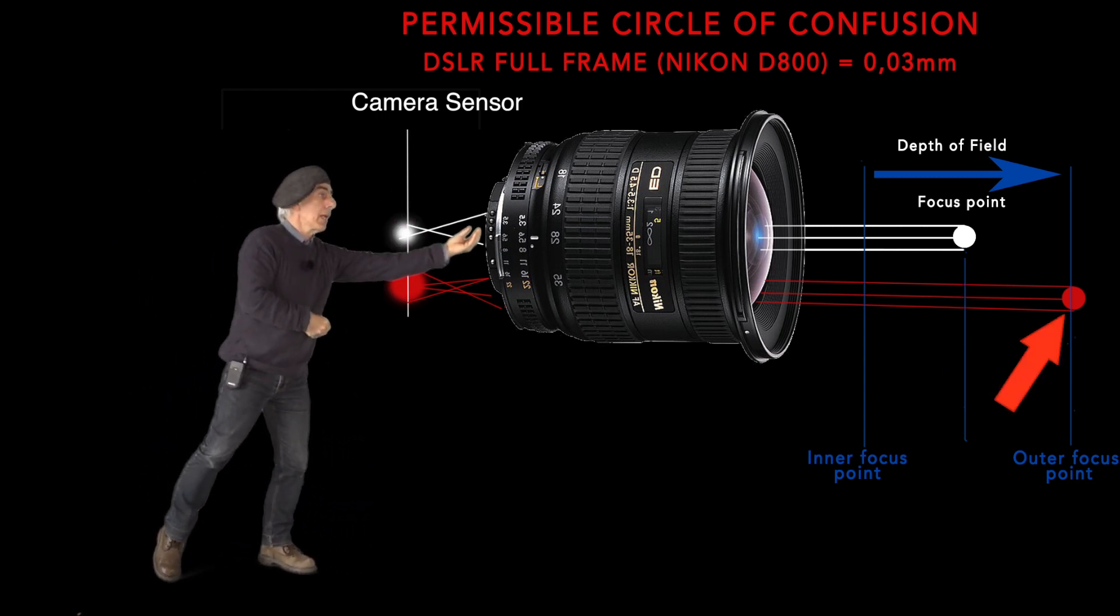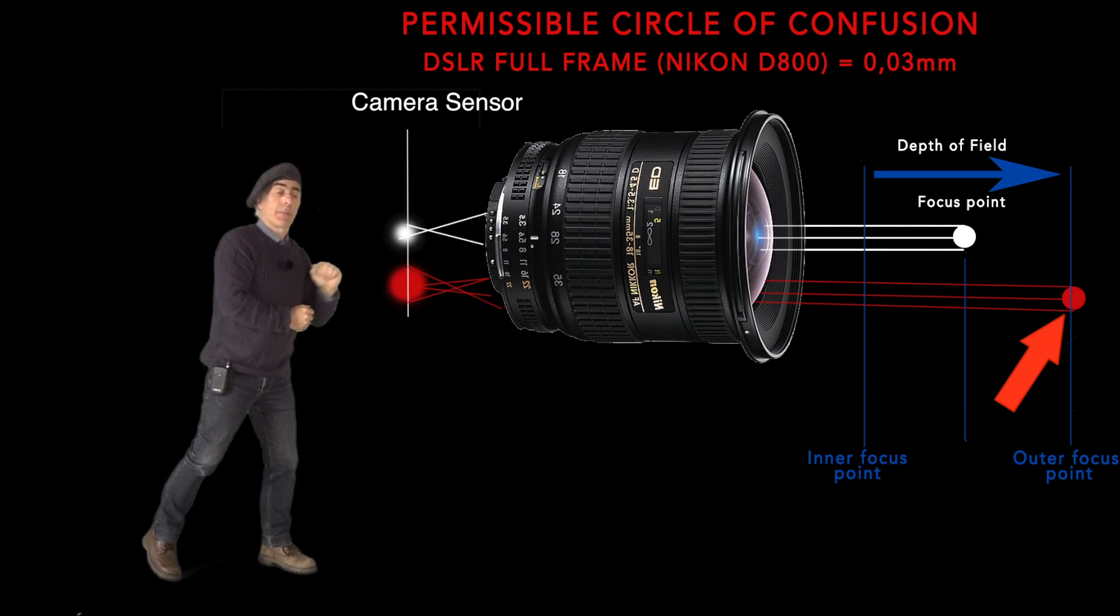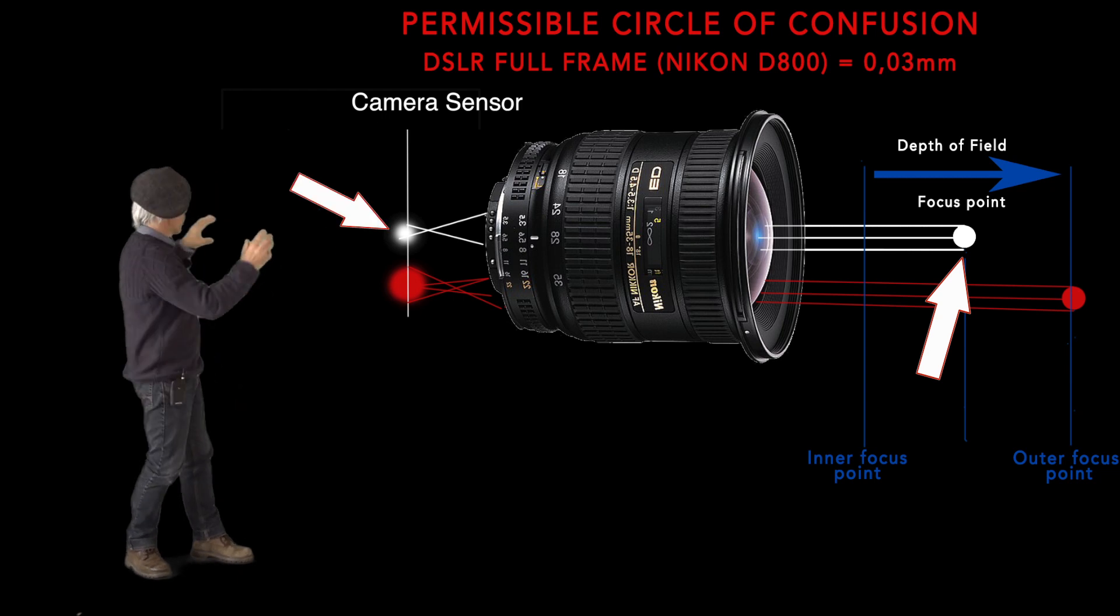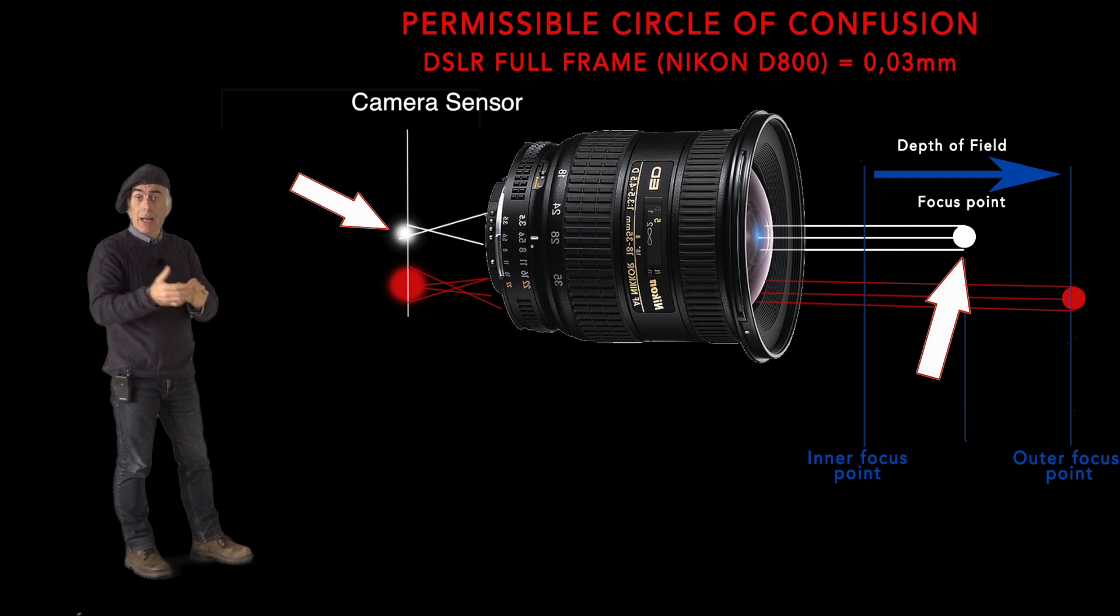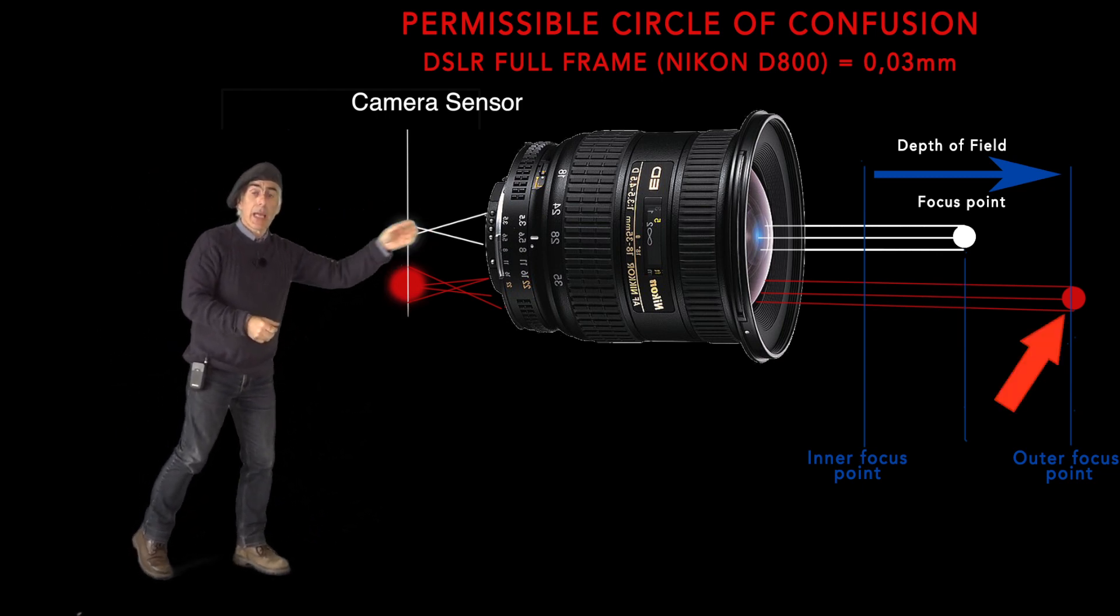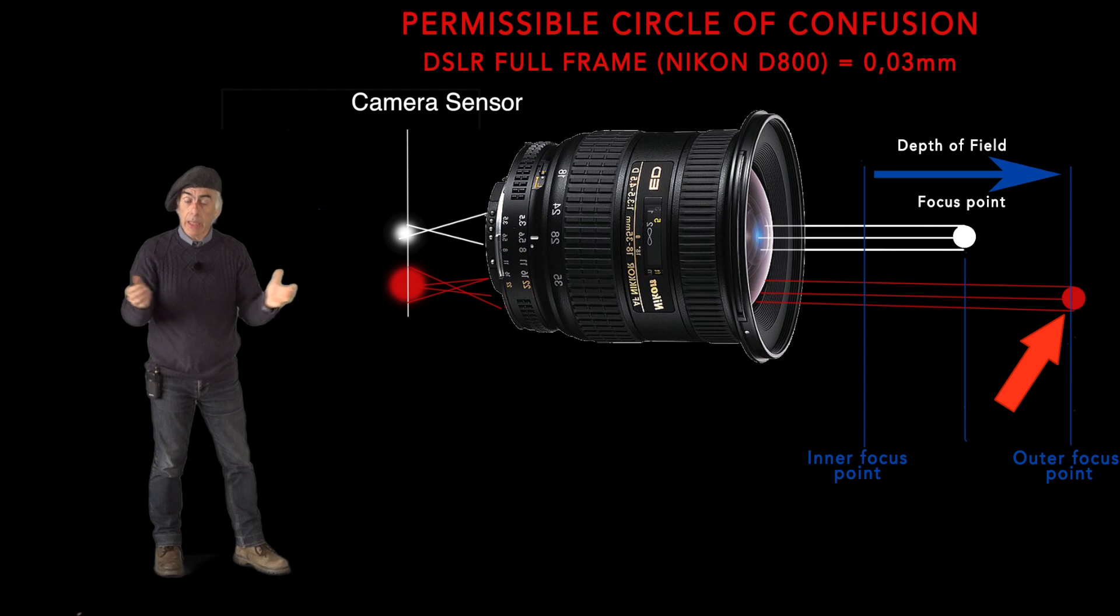If we focused on the first object, that object will show sharp on your sensor based on your lens circle of confusion. The second object, which is further away, and it depends how far it is away or how close it is, it will actually be blurred to a certain degree.